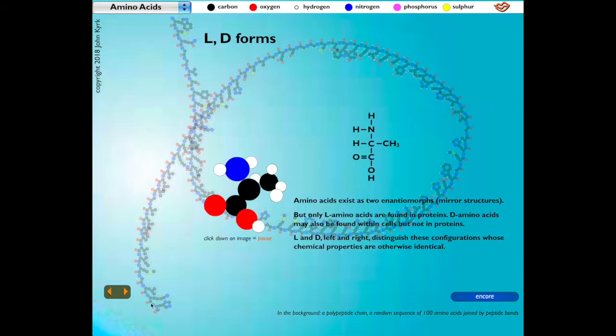Each amino acid has a left or right form. The right form is sometimes called the dexter form. Amino acids exist as two enantiomorphs, or mirror image structures. Only L amino acids are found in proteins. D amino acids may also be found within cells, but not within proteins.